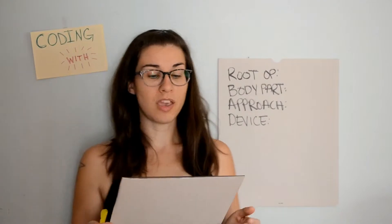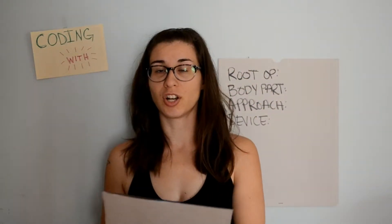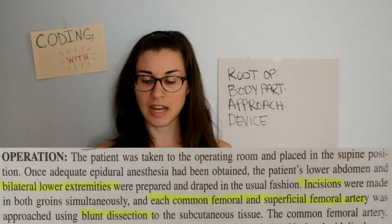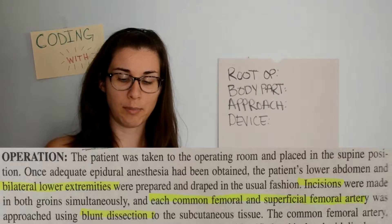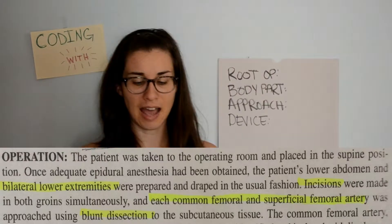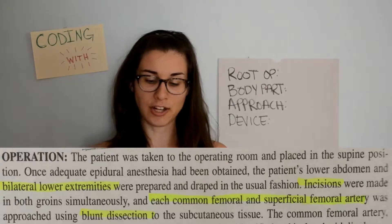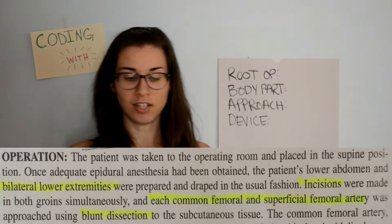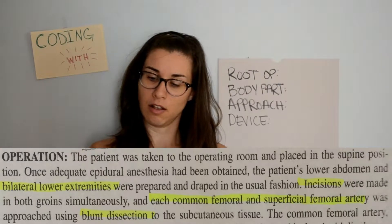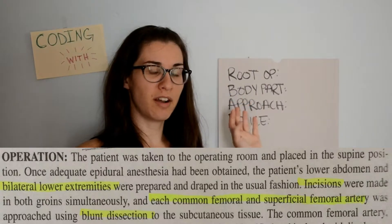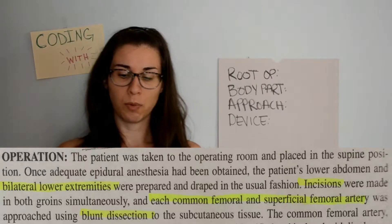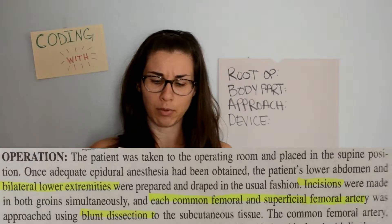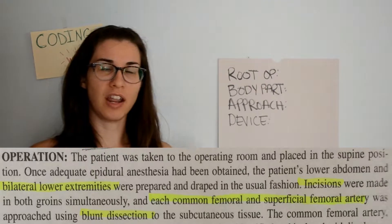Before we write anything in our notes, we're going to read the actual procedure and see if this truly is a femoral bypass graft or if there are more procedures happening within it. The patient was taken to the operating room and placed in the supine position. Once adequate epidural anesthesia had been obtained, the patient's lower abdomen and bilateral lower extremities were prepared and draped. Incisions were made in both groins simultaneously.